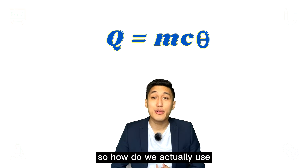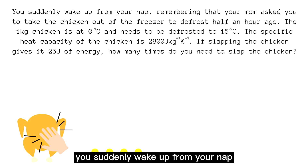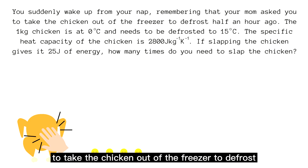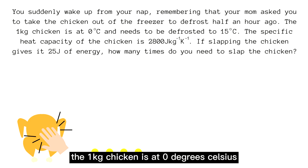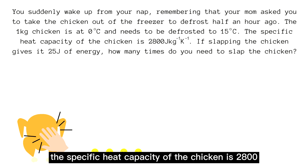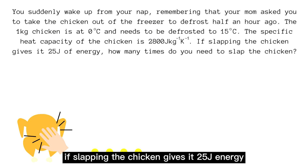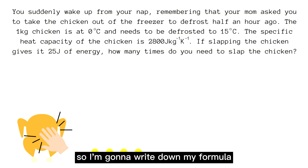So how do we actually use this specific heat capacity equation? Let's have a look at the example. You suddenly wake up from your nap remembering that your mom asked you to take the chicken out of the freezer to defrost half an hour ago. The 1 kg chicken is at 0 degrees Celsius and needs to be defrosted to 15 degrees Celsius. The specific heat capacity of the chicken is 2800 joules per kg per kelvin. If slapping the chicken gives it 25 joules of energy, how many times do you need to slap the chicken to save your life?